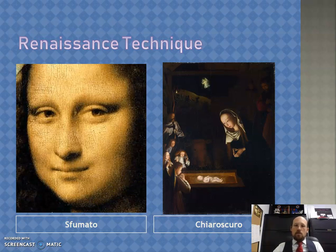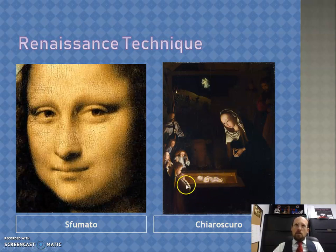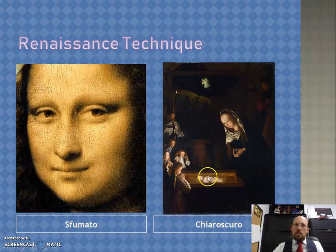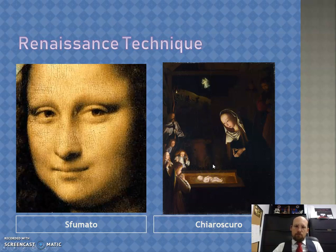Another technique is called chiaroscuro. Chiaroscuro is Italian for light and shadow, and essentially it's trying to realistically depict the play of light and shadow on objects. In this picture — a nativity scene — baby Jesus is really a source of light, and you can see the light reflected on Mary and on the angels. It's done in such a way that if you actually had a candle there, that's about what it would look like in real life.